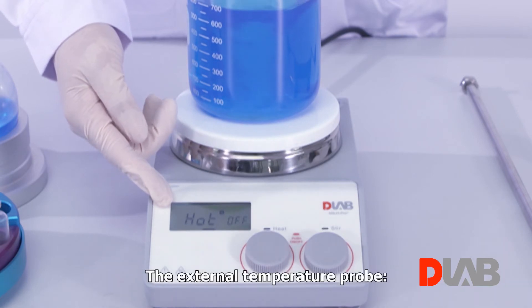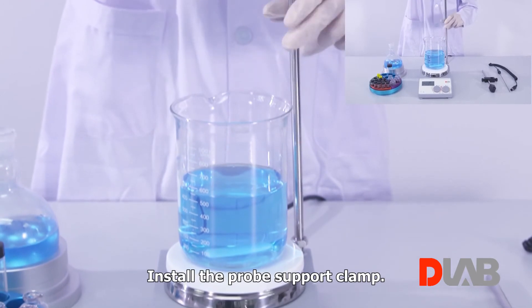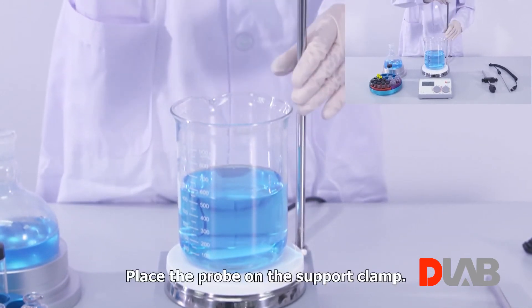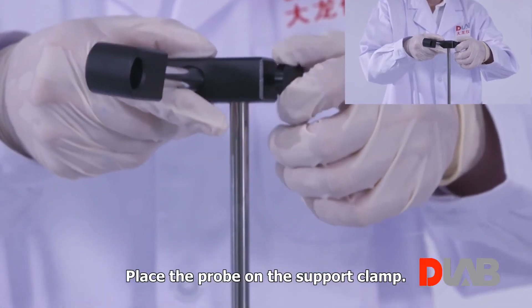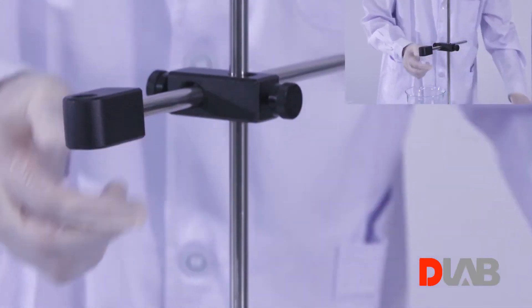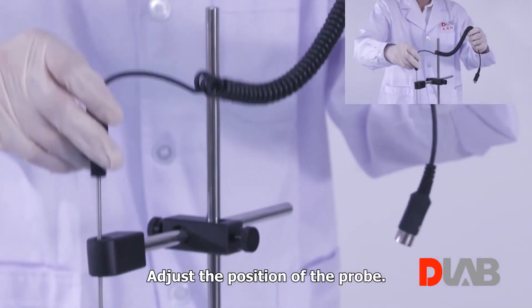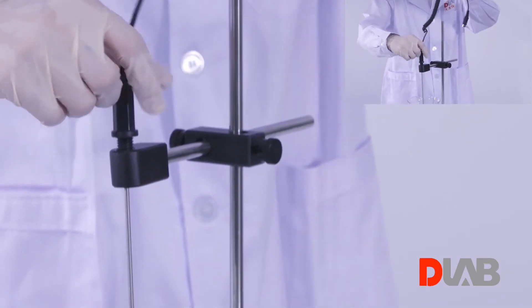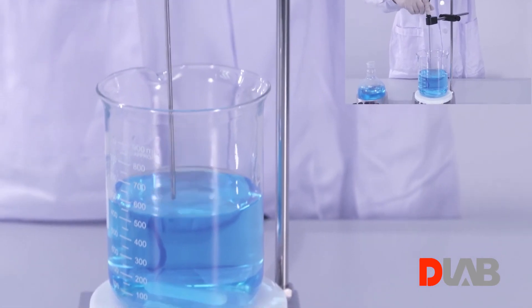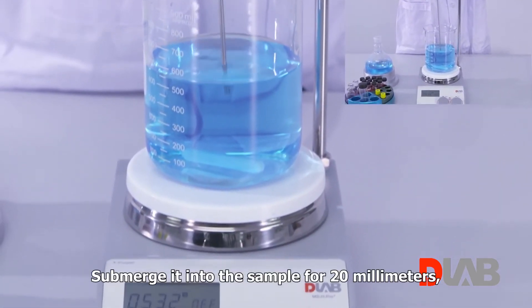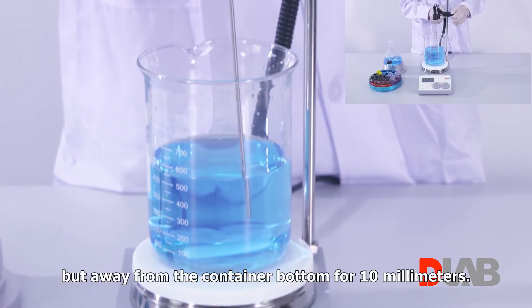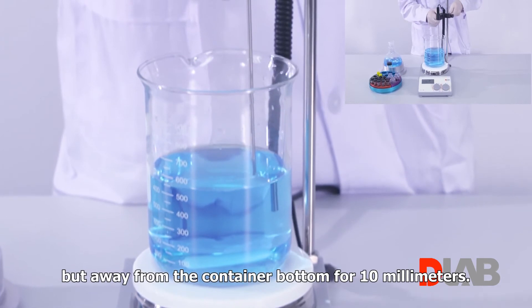The external temperature probe. Install the probe support clamp. Place the probe on the support clamp. Adjust the position of the probe. Submerge it into the sample for 20 millimeters, but away from the container bottom for 10 millimeters.